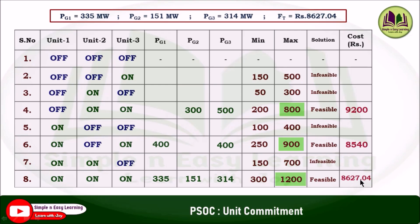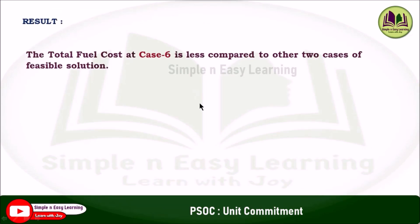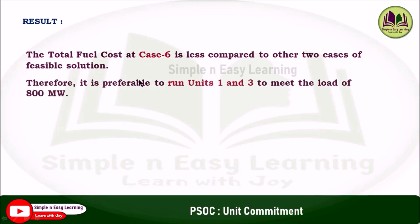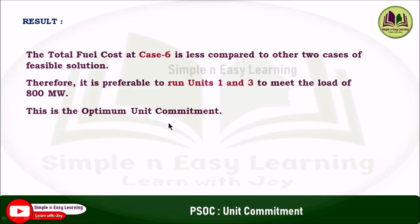Out of the three feasible combinations, case 6 with a cost of rupees 8540 is the least, compared to case 4 (rupees 9200) and case 8 (rupees 8627.04). Therefore, it is preferable to run unit 1 and unit 3 to meet the load of 800 megawatt. This is the optimum unit commitment solution of the given problem using brute force enumeration technique.